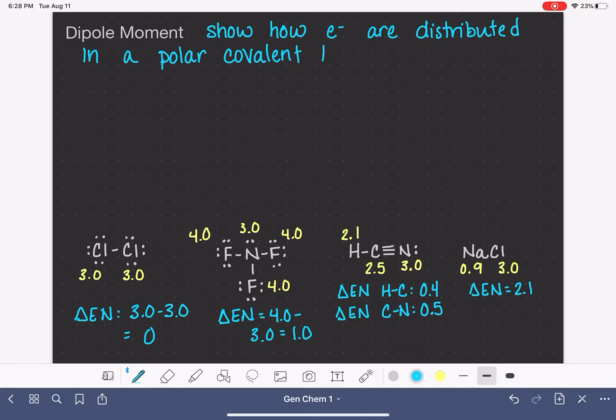As a refresher, when we have a polar covalent bond, this means that electrons are being shared between two atoms, but they're not being shared equally.